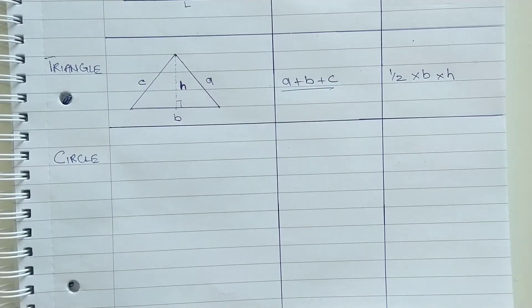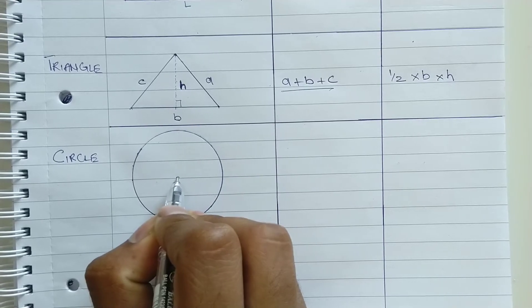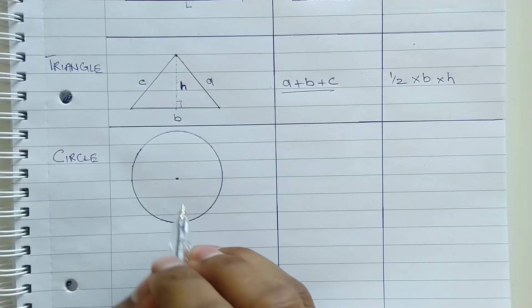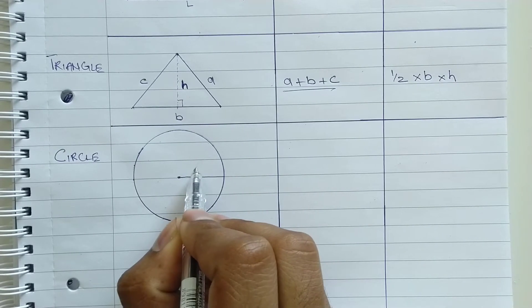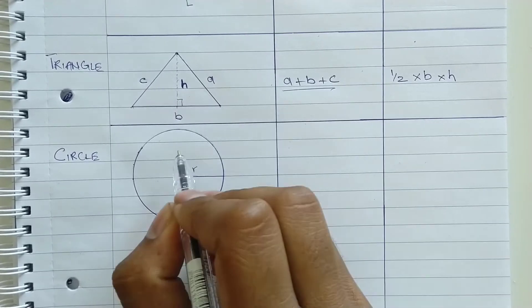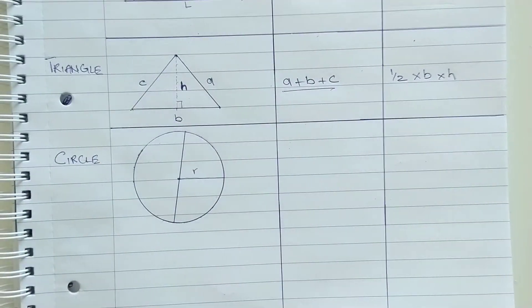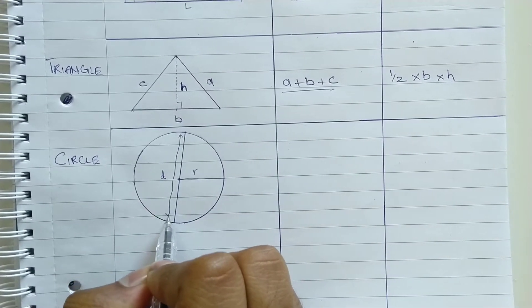Next we have circle. The outer ring is the perimeter of a circle which is also known as circumference. From the center of a circle, a single line that touches the circumference is called radius. We can denote it by R. And a line that dissects a circle into 2 flowing through the center is called diameter. We can denote it by D.